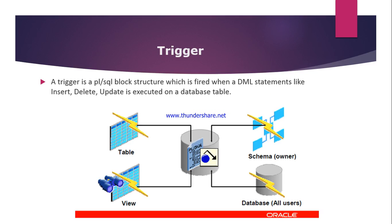A trigger is like a stored procedure that Oracle database invokes automatically whenever a specific event occurs. Like a stored procedure, a trigger is a named PL/SQL block that is stored in the database and can be invoked repeatedly. Unlike a stored procedure, you can also enable or disable a trigger, but you cannot explicitly invoke it.